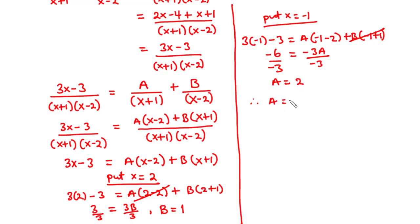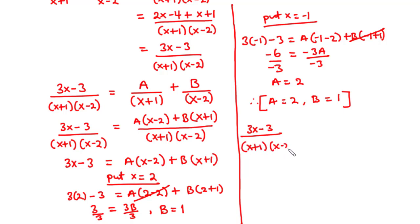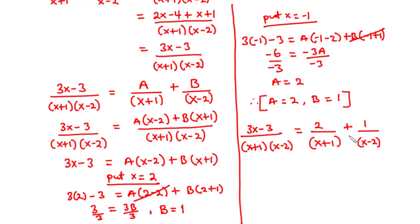Therefore, a equals 2 and b equals 1. The rational function 3x minus 3 divided by x plus 1 times x minus 2 has been resolved into partial fractions as 2 over x plus 1 plus 1 over x minus 2. Now let's solve another example.